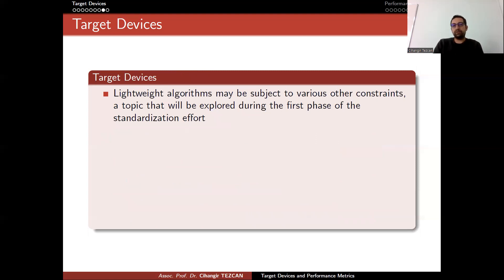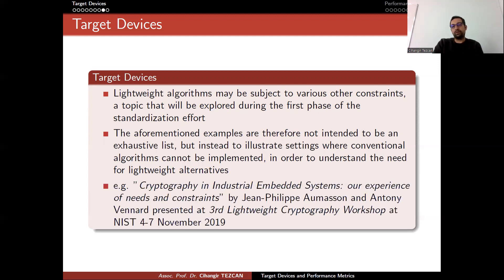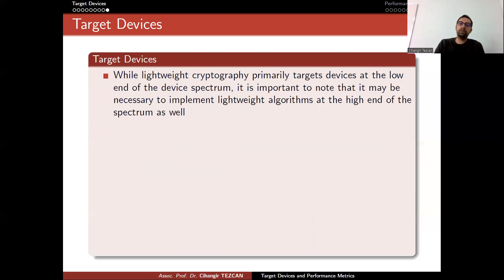Lightweight algorithms may be subject to various other constraints, a topic that will be explored during the first phase of the standardization effort. The aforementioned examples are not intended to be an exhaustive list, but instead to illustrate settings where conventional algorithms cannot be implemented, in order to understand the need for lightweight alternatives. If you're interested, I recommend reading 'Cryptography in Industrial Embedded Systems: Our Experience of Needs and Constraints' by Jean-Philippe Aumasson and Antoni Vasena.